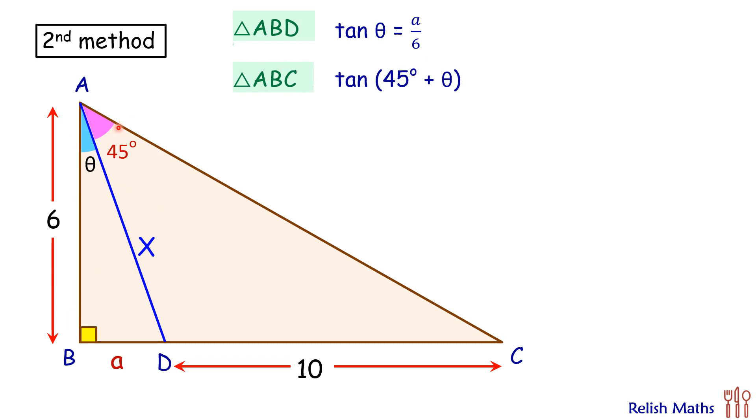This will be perpendicular upon base, that is a plus 10 upon 6. Now using expanding this tan 45 plus theta, so this will be 1 plus tan theta upon 1 minus tan theta. Now in the LHS putting value of tan theta as a upon 6.